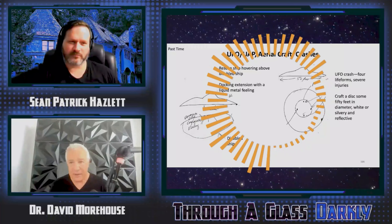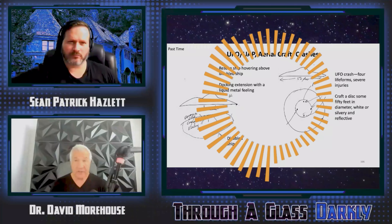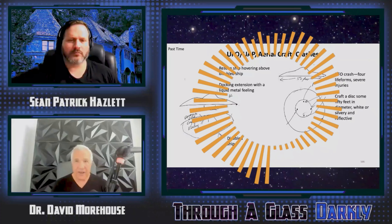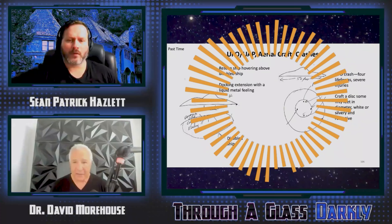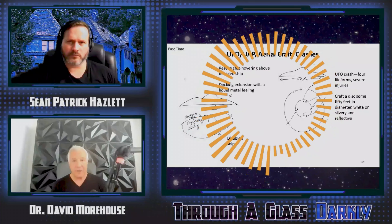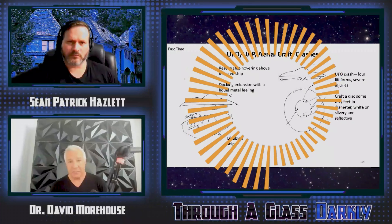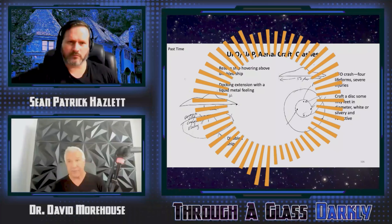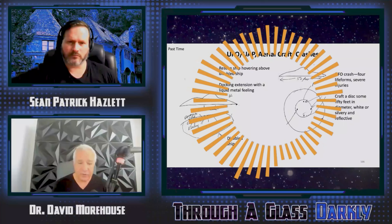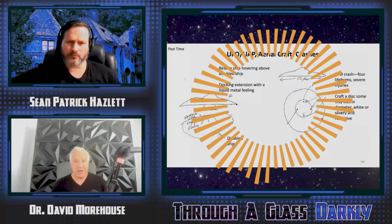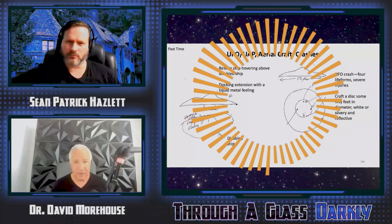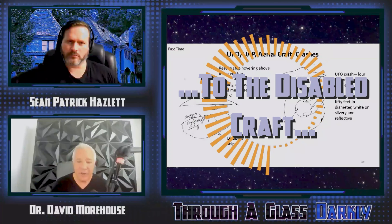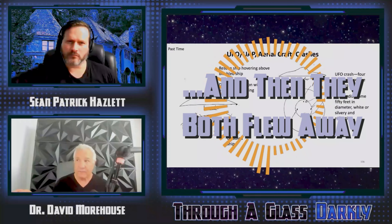I am also told that there were witnesses to this: a saucer-like craft that became disabled on the ranch, back in the trees, and landed there. Another craft came over to it, extended a docking mechanism of some sort, attached itself to the disabled craft, picked it up, and then they both flew away.